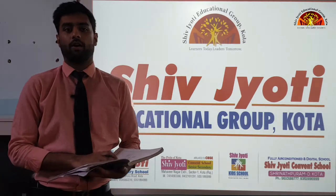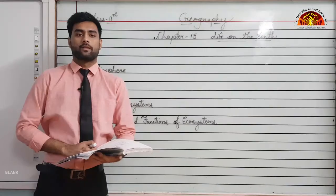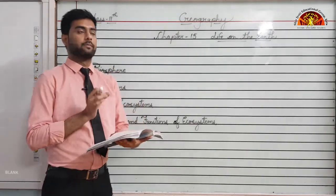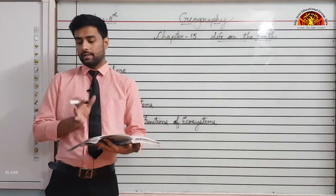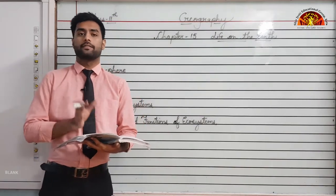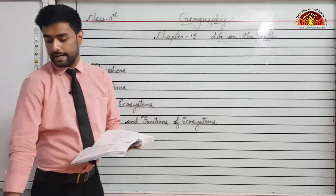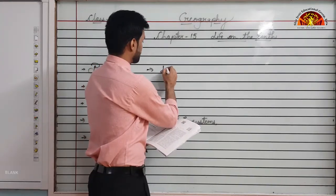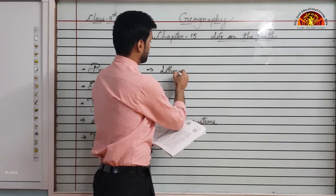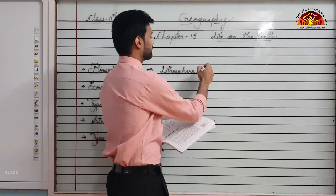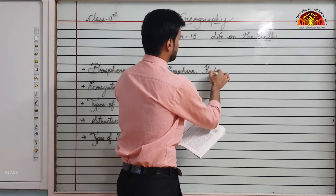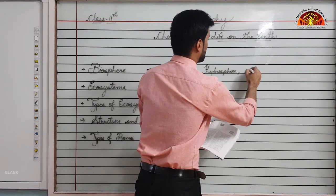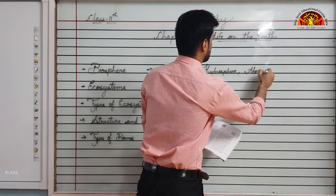Please open your book on page number 123. Up until now we have learnt about the different spheres of Earth, that is the lithosphere, the land part; the hydrosphere, the water part; and the atmosphere, that is the air.